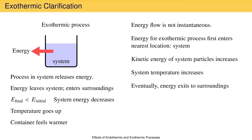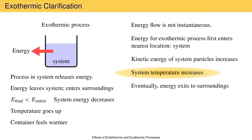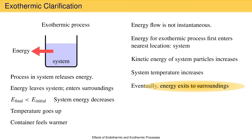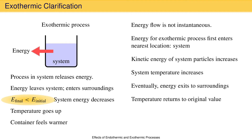In the meantime, the system and its container feel warmer. Just like for an endothermic process, you need to distinguish what is observed in the short term from what is observed in the long term. When an exothermic process takes place, energy is released as the process takes place, and in the short term, that energy will be deposited in parts of the system, causing the temperature of the system to increase and the container to feel warmer. In the long term, all that energy will flow out of the system into the surroundings. In the long term, the system temperature will return to its initial value, and the system energy will then be less than it was before. Always remember to distinguish short-term observations from the long-term outcome.